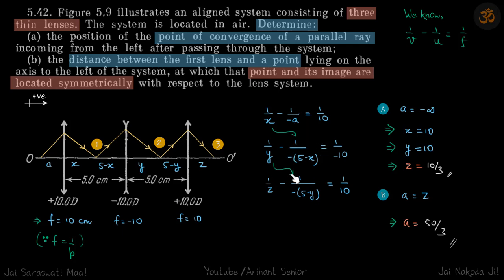So when we get that relation between a and z, you can see if I put the value of a as minus infinity then I will get the value of z as 10 by 3. So I am not solving it you can just do that. So if a is minus infinity this term becomes zero so x becomes plus 10.